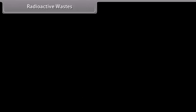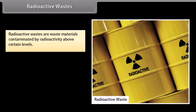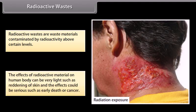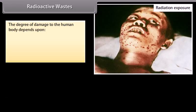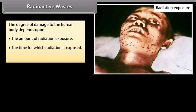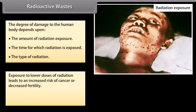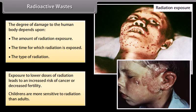Radioactive wastes are waste materials contaminated by radioactivity above certain levels. The effects of radioactive material on the human body can be very light, such as reddening of skin, or serious, such as early death or cancer. The degree of damage depends upon the amount of radiation exposure, the time for which radiation is exposed, and the type of radiation. Exposure to lower doses of radiation leads to an increased risk of cancer or decreased fertility. Children are more sensitive to radiation than adults.